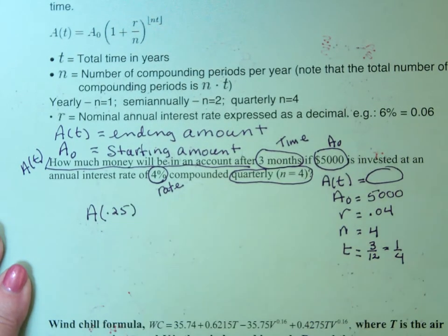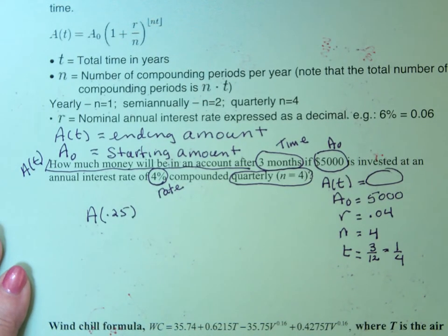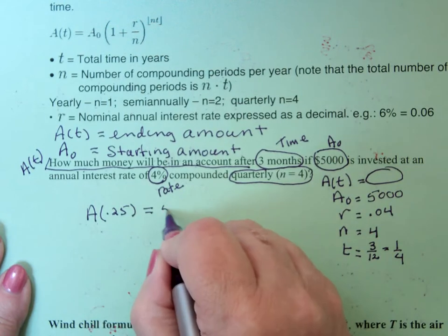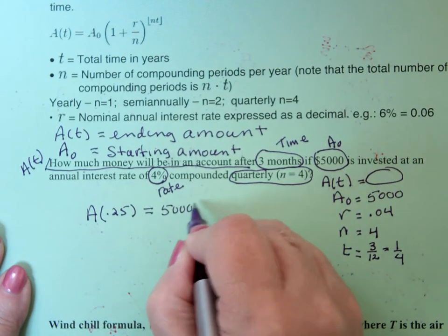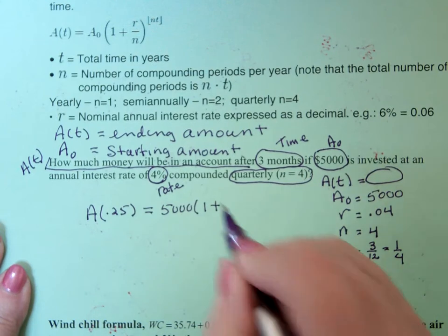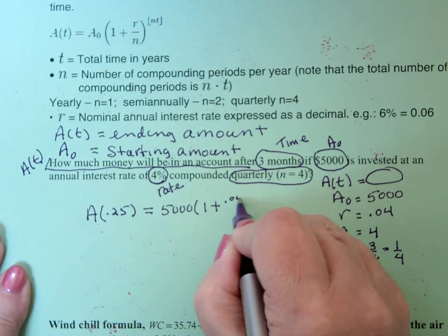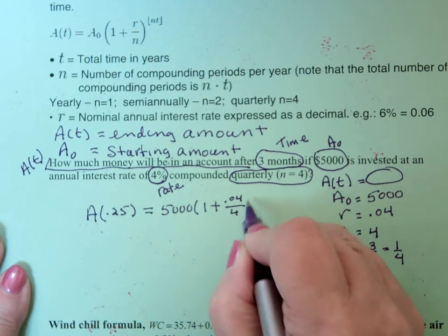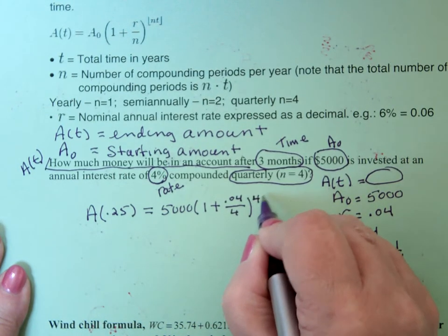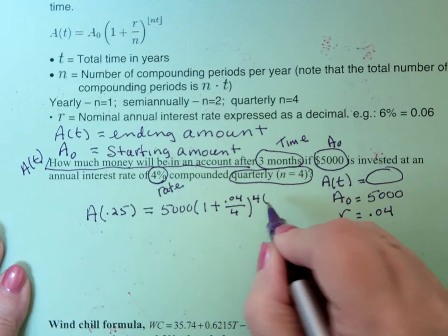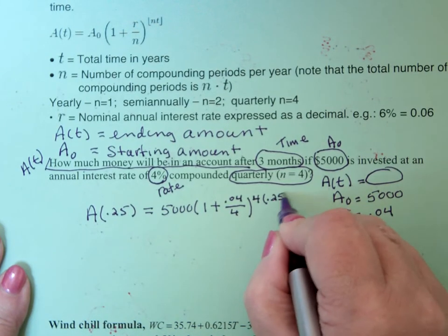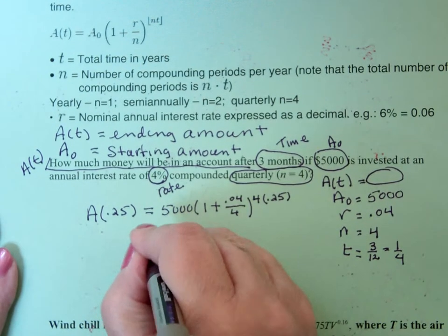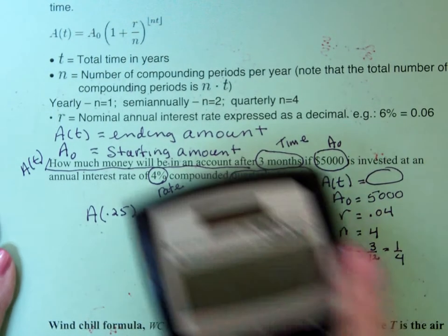That's the same as 1 fourth. That makes it easier for me to work with with my calculator. It's going to be A sub 0, which is 5,000, times 1 plus R, which is .04, divided by N, which is 4, to the N, which is 4, times T, which is .25. And now, it's just a plug and chug with my calculator.